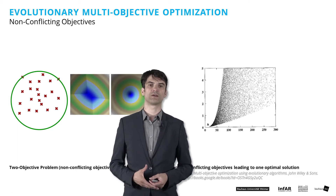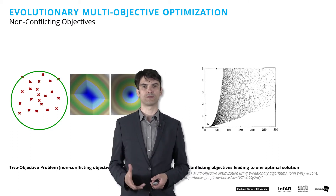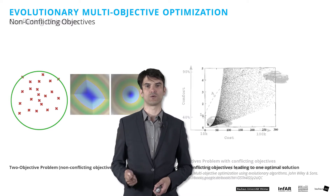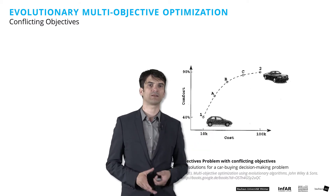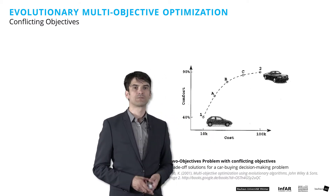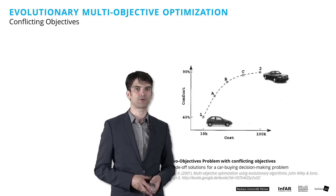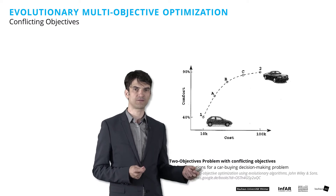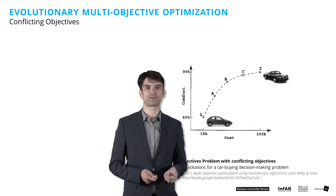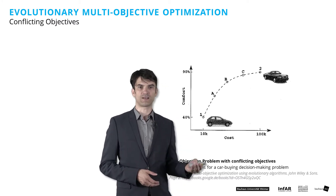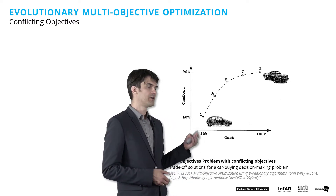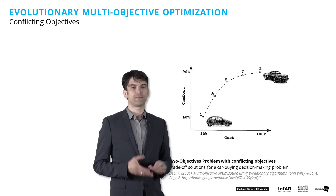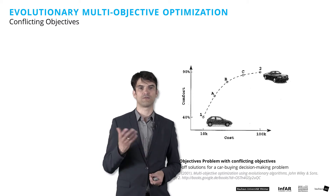The more interesting problems — and the reason for using multi-objective optimization methods — are problems that are conflicting with each other. In this example with the decision-making problem of which car to buy, we have a conflict caused by two objectives: one is that the car shall be as cheap as possible, and the second is that the car shall be as comfortable as possible.